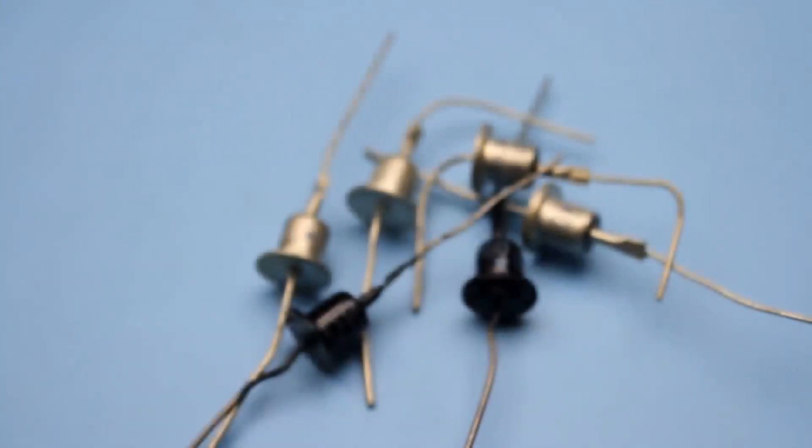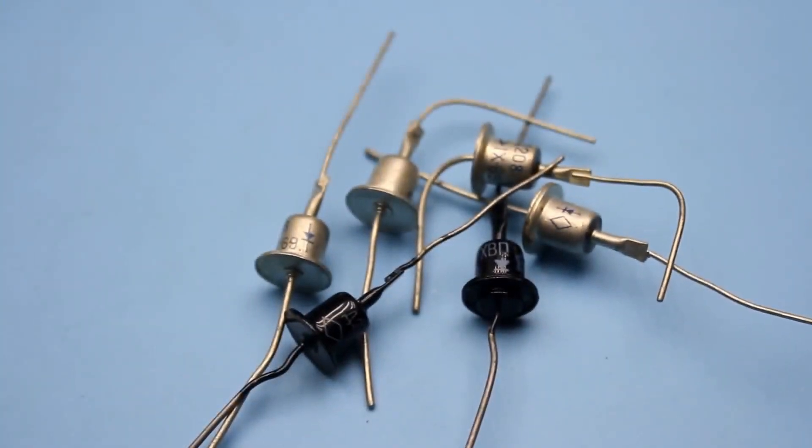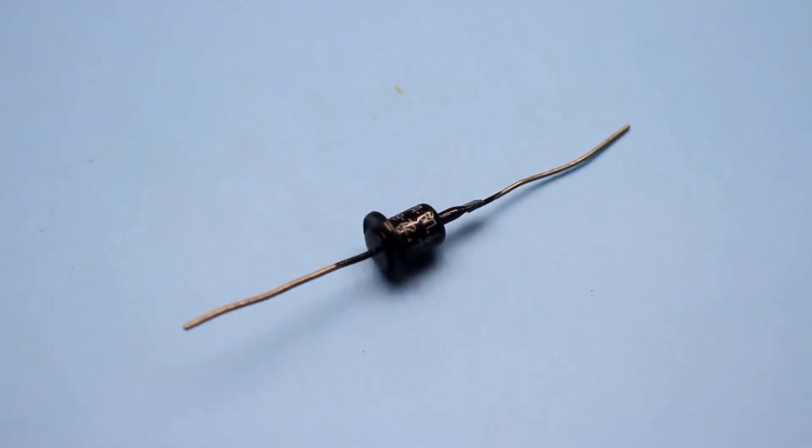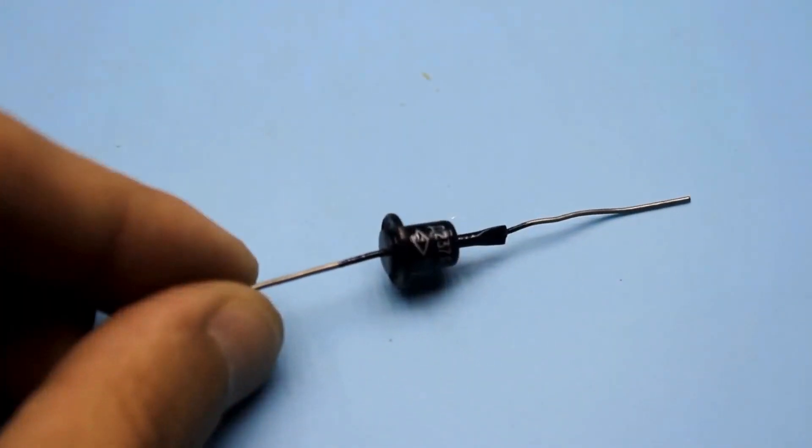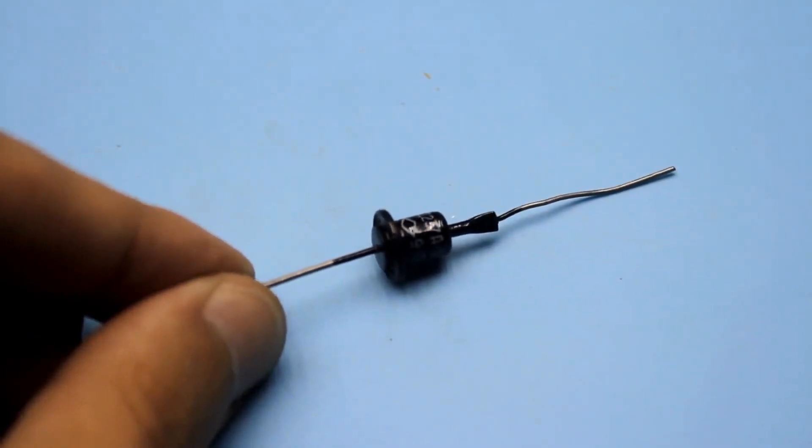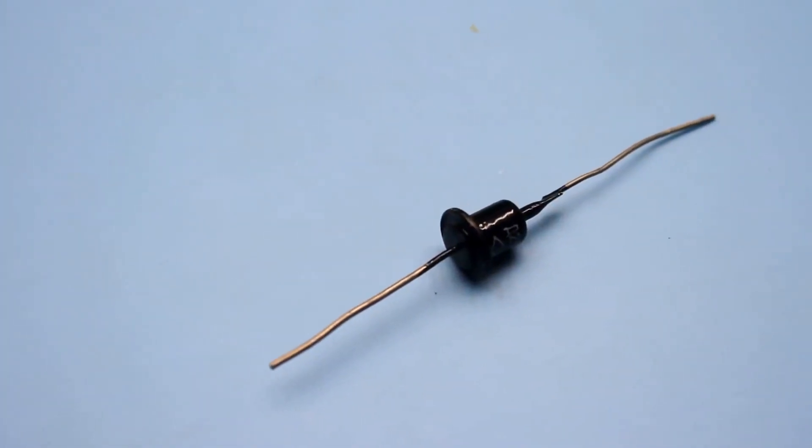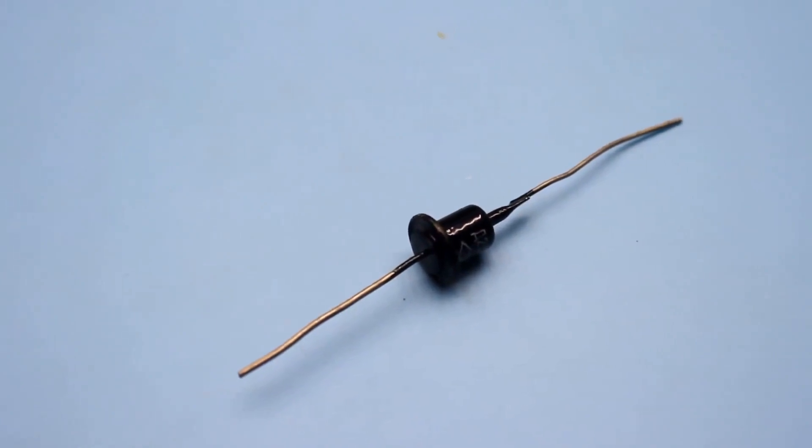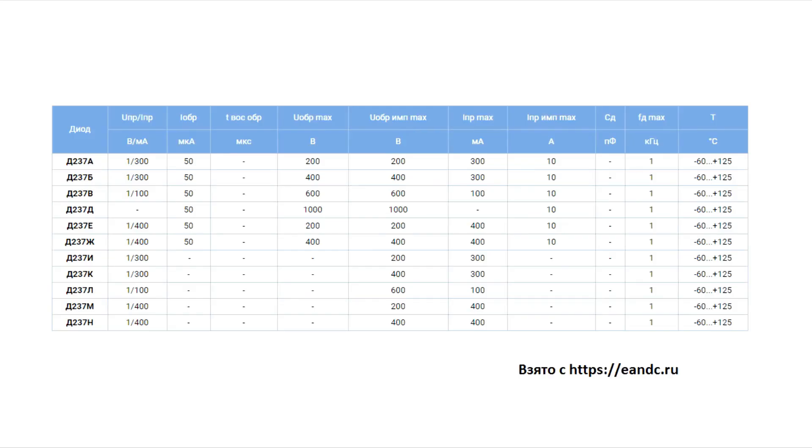The diode casing is painted black. The paint provides resistance to corrosion and also, to some extent, insulates the diode, minimizing possible short circuits with neighboring elements. The reverse voltage of these diodes, depending on the index, ranges from 200 to 600 volts. And only the diode with the D-index has a reverse voltage of 1,000 volts. The average current of the diode is about 400 milliamps. The operating frequency is also 1 kilohertz.